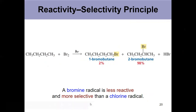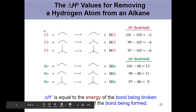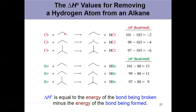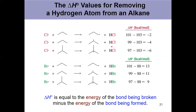Bromine is less reactive and more selective, which holds for all things. Let's look at some bond energetics. Looking at these chlorine propagation steps: chlorine radical plus your alkane forming another radical. Every one of those is an exothermic reaction. Bond broken minus the energy of the bond being formed — a negative delta H means it's exothermic. Every one of our chlorinations in that situation is exothermic. And if it's exothermic, the Hammond postulate tells us that the transition state looks like the reactants.